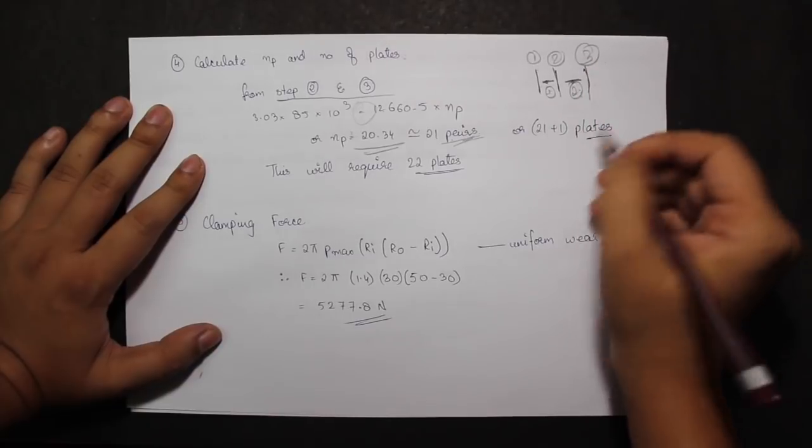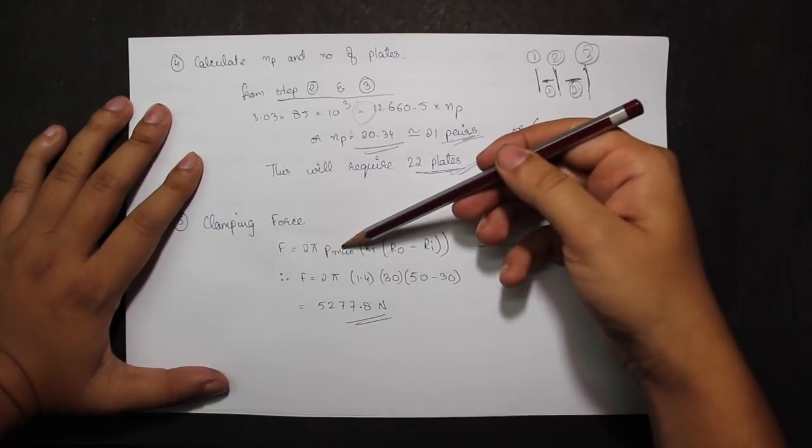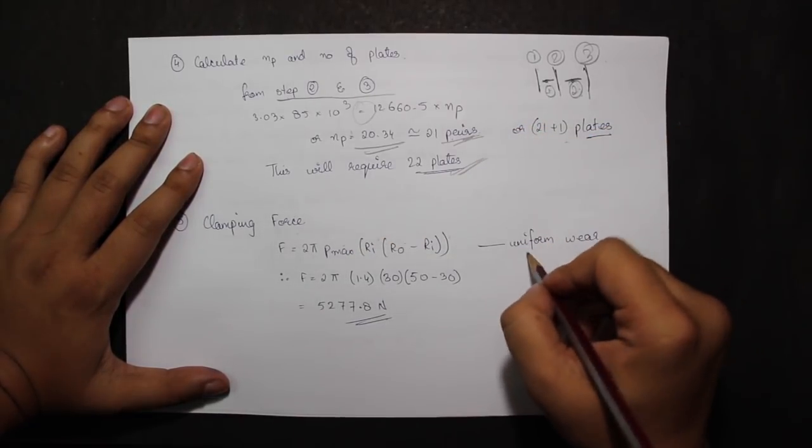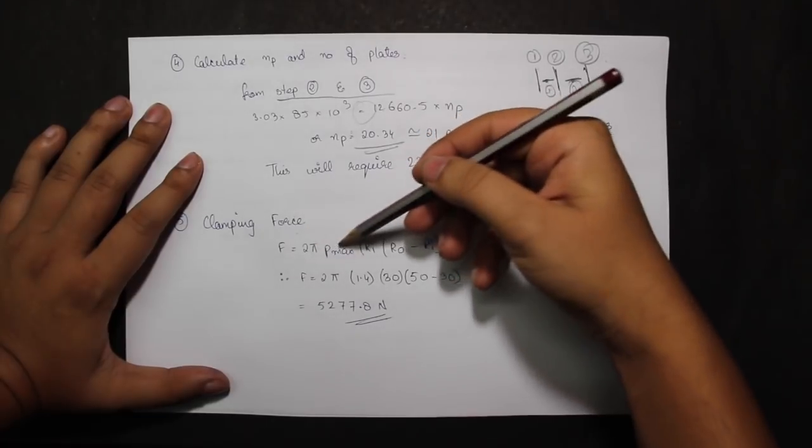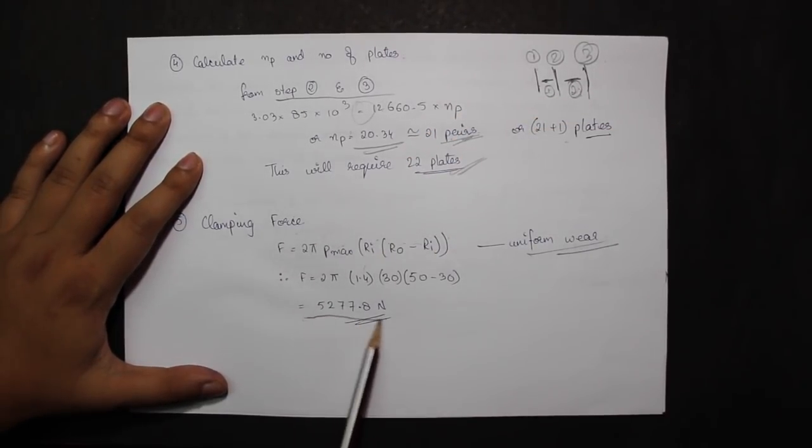The clamping force can be directly calculated from this formula. F is equal to 2 pi P max ri r0 minus ri, which is for the uniform wear. I know the value for P max, ri, and r0. Therefore my clamping force turns out to be 5277.8 Nm.